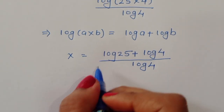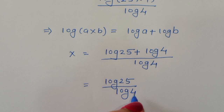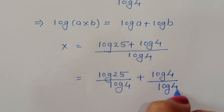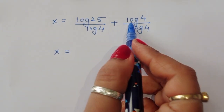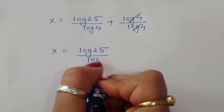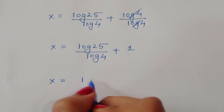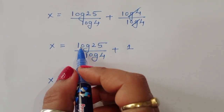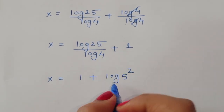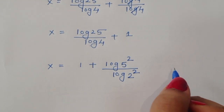Now we can separate this term: log of 25 divided by log of 4, plus log of 4 divided by log of 4. The log of 4 over log of 4 cancels to 1. We can write log of 25 as log of 5 squared, and log of 4 as log of 2 squared.